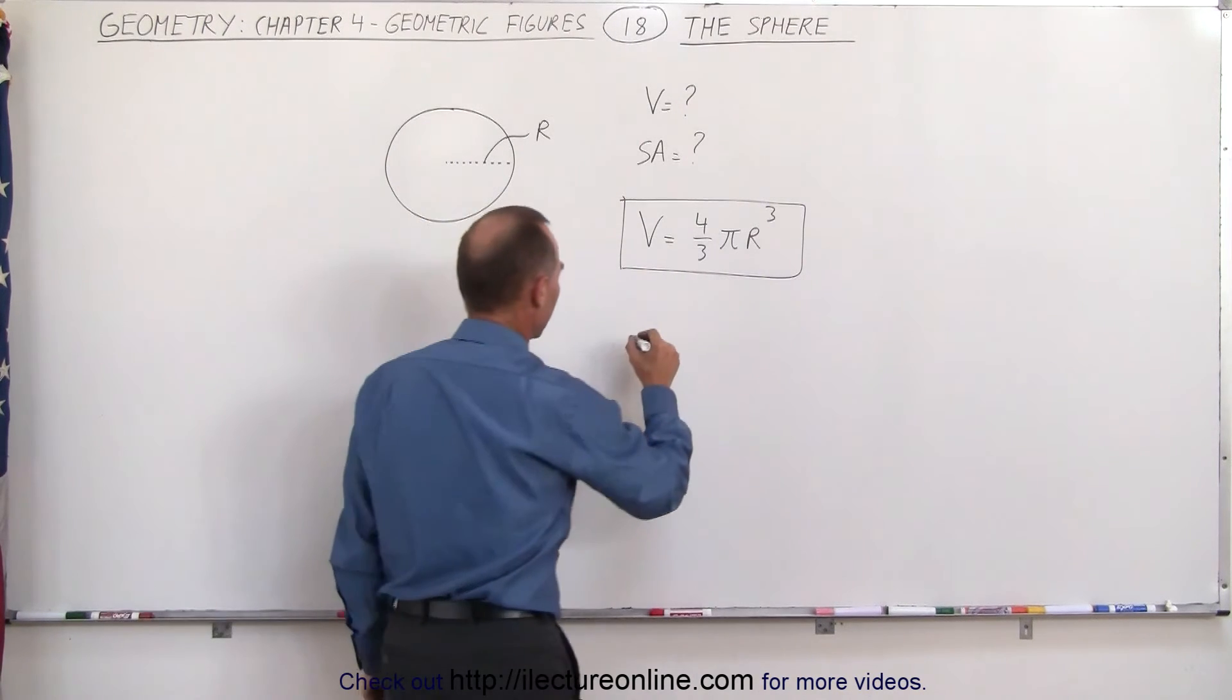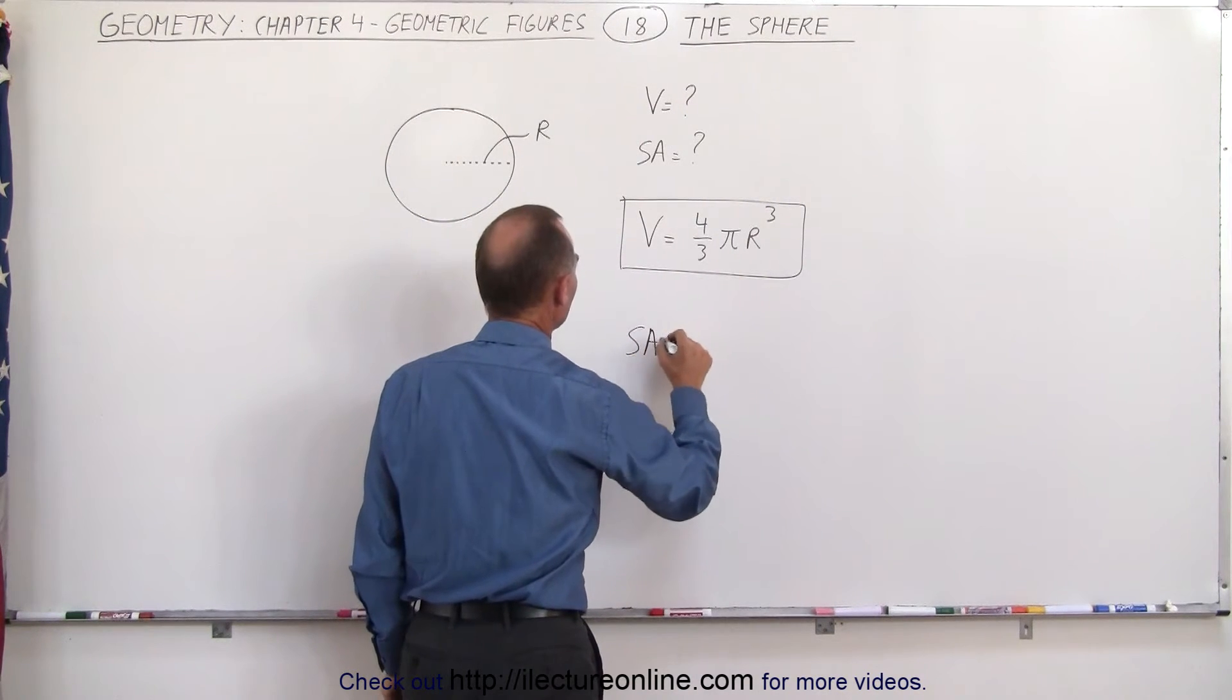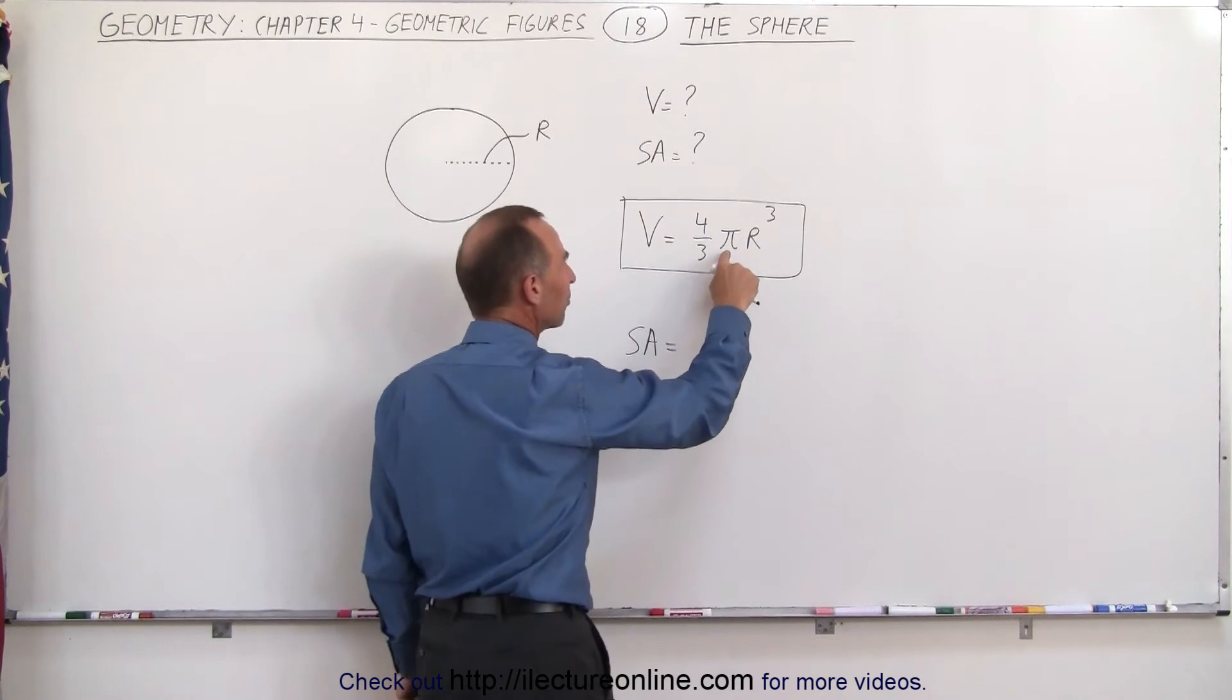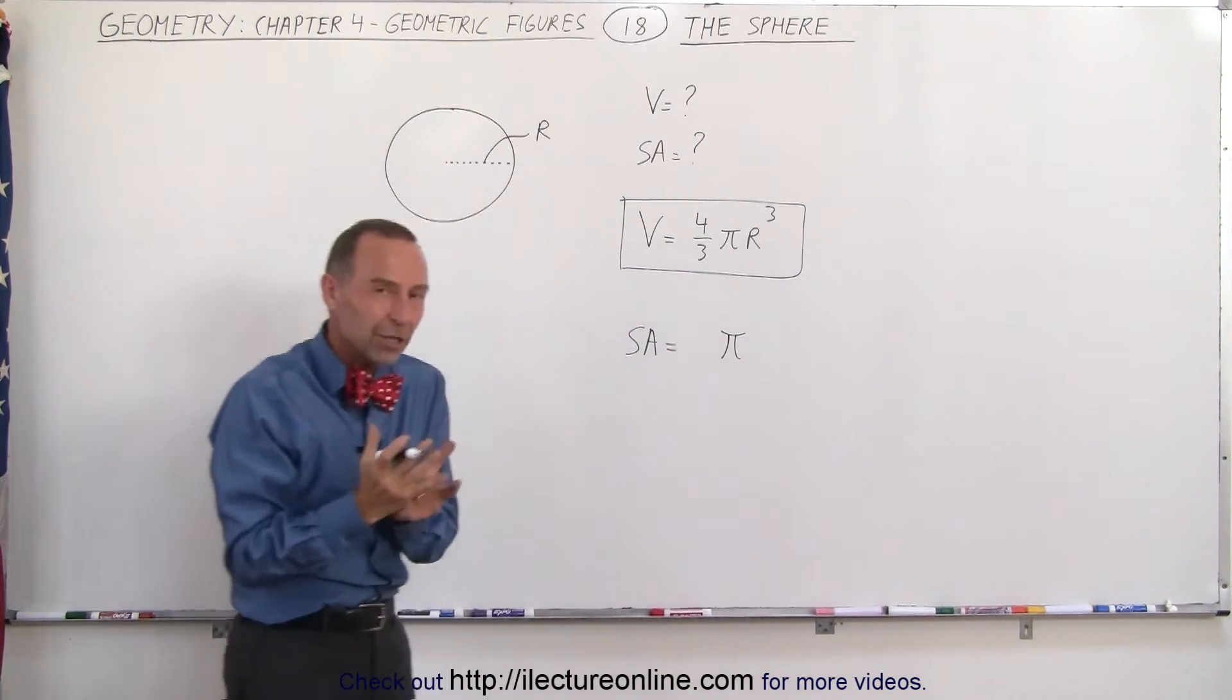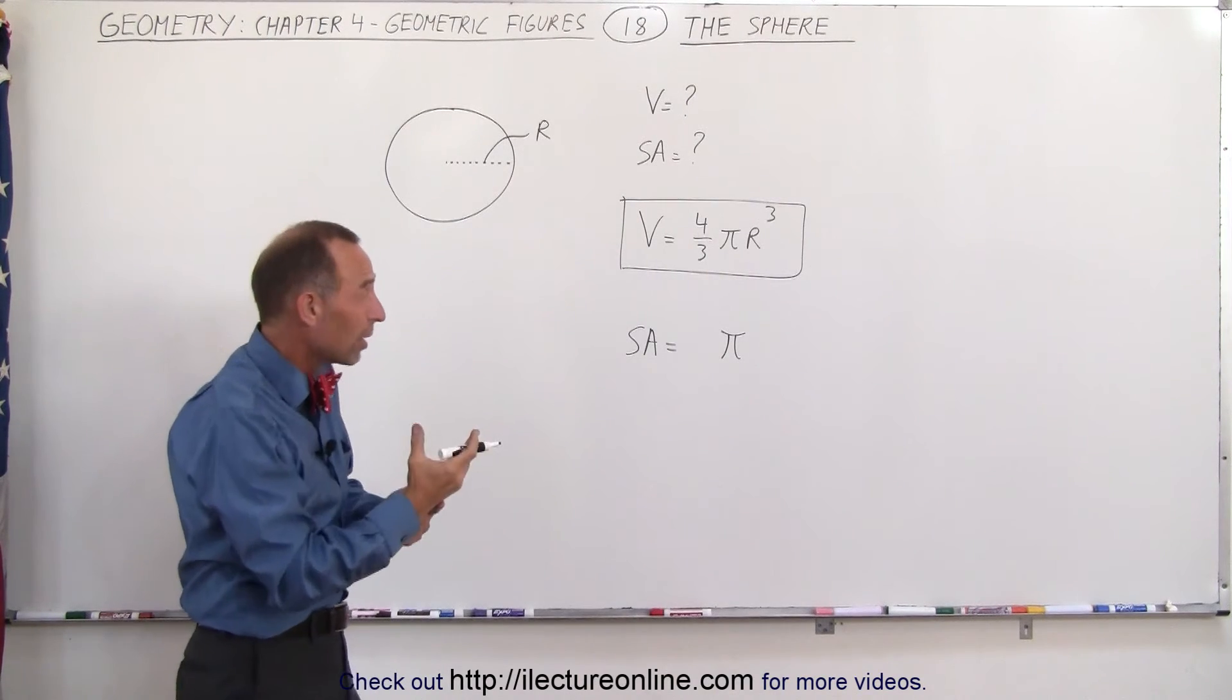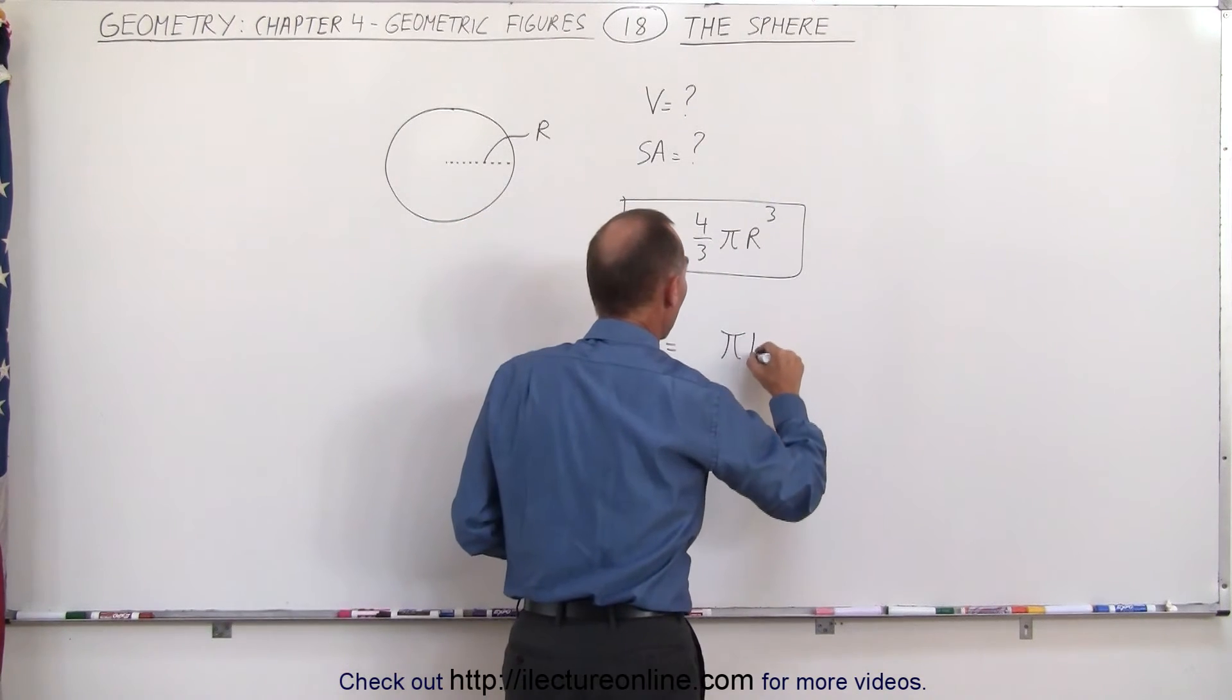But now for the surface area. The surface area is equal to, well again we expect to find the pi in there and since it's the surface area, area is associated with squared, we know that it needs to be r squared.